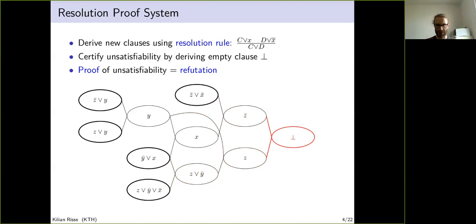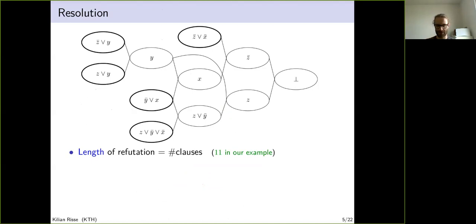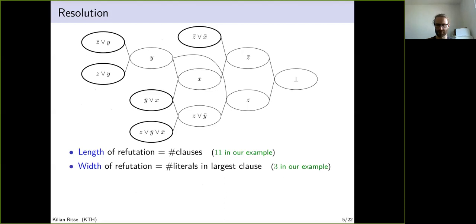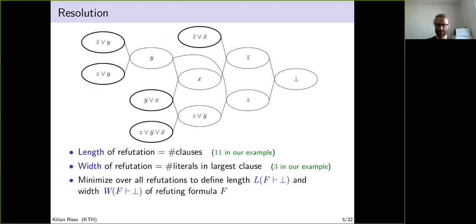There are measures we care about in resolution. The most important is the length of a refutation, which is just the number of clauses in a proof of unsatisfiability—in our example this is 11. Another notion is the width of a refutation, which is the number of literals in its largest clause—in our example this is 3. The length of refuting a formula is the minimum length required, and the width of refuting a formula is the minimum width required.